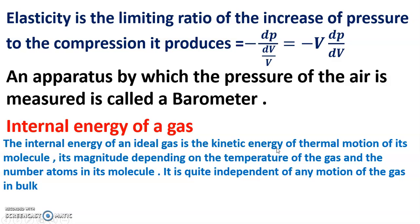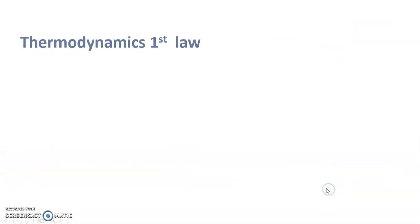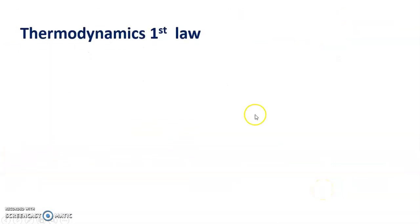The internal energy of an ideal gas is the kinetic energy of thermal motion of its molecules, its magnitude depending on the temperature of the gas and the number of atoms in its molecule. It is quite independent of any motion of the gas in bulk. Thermodynamics first law: